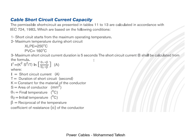The short circuit current I shall be calculated from the formula, where I equals the short circuit current in amperes, T is the duration of short circuit in seconds, K is a constant for the material of the conductor, and S is the area of the conductor in millimeters squared.